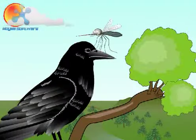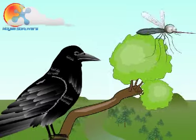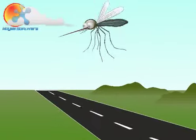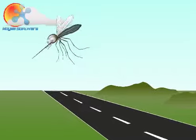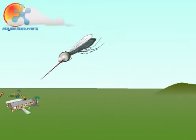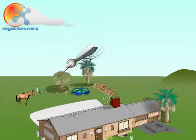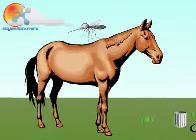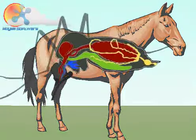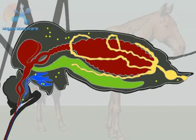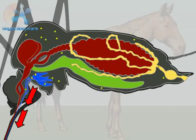Some common hosts are wild birds such as crows, finches, and sparrows. Humans and horses are accidental hosts for West Nile Virus. An accidental host is not capable of spreading the virus to other humans or animals. The virus is passed to other animals and humans when the female mosquito feeds again.